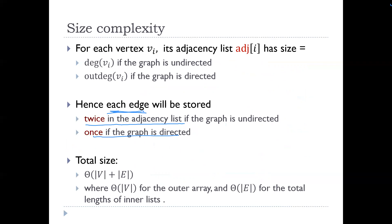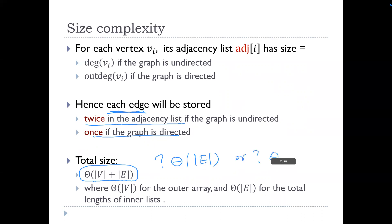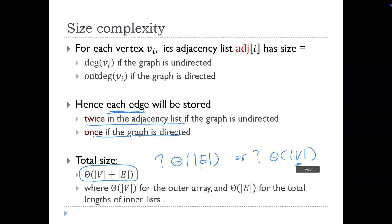Why write O(V + E) rather than just one term? Because for graphs, we have two input sizes — the number of nodes and the number of edges — and we don't always know which is bigger. If the graph has no edges, V dominates. If the graph is complete, E becomes quadratic in V and dominates. In general, since we don't know the relationship, we must write both terms.